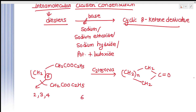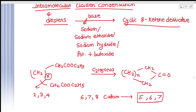Whenever there are 6, 7, or 8 carbon atoms, they form a ring of stable number — that is, 5-, 6-, or 7-membered rings are formed. We know these 5-, 6-, or 7-membered rings are highly stable, so in such cases we get a good yield. But when there are 9 to 10 carbon atoms, the yield will be very low.